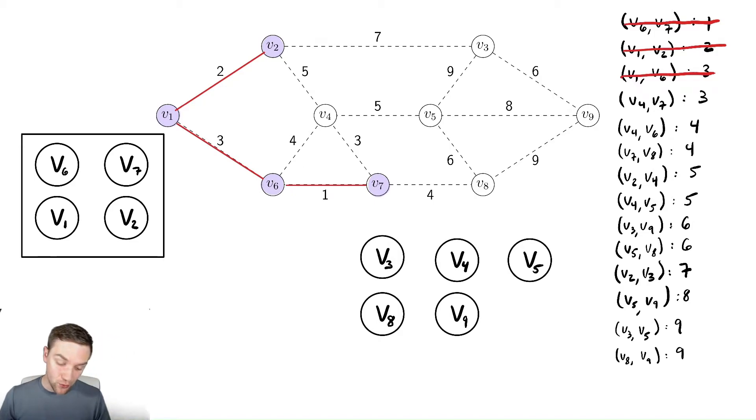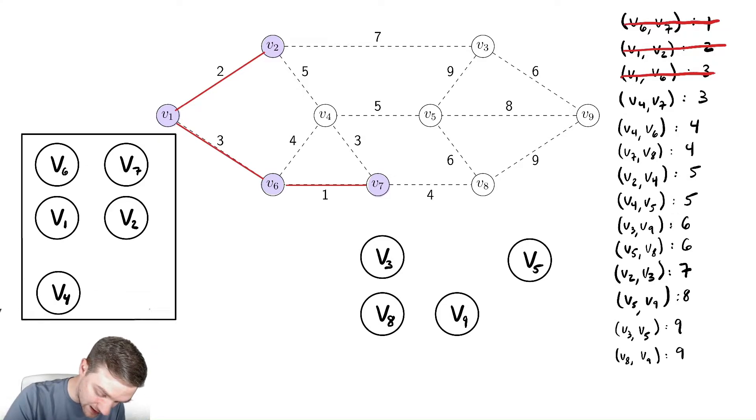We then want to add v4, v7. We notice v4 is not in the set and it is in a different set, a disjoint set than the set that contains v7.